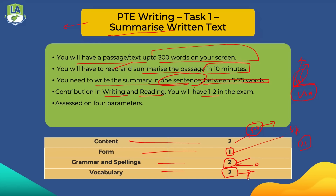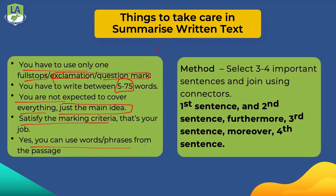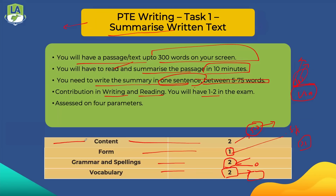Two points for vocabulary — make sure you do not use any informal language; use academic words. The strategy I'm going to tell you will take care of this automatically. You have to use only one full stop, write between 5 and 75 words — ideally around 60 words. You're not expected to cover everything; if the passage is 300 words and you're writing 50, just focus on the main idea. You can use the same words, sentences, or phrases from the passage.